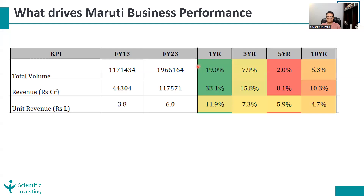I have taken FY13 and FY23 numbers here. Let us look at the five and ten year numbers rather than one and three year, because the auto sector is doing well and those numbers will look very good. The volume growth rate for Maruti averages around 3.5 percent, versus the unit revenue growth rate of around 5.5 percent. In 2013, the average selling price of one Maruti car was 3.8 lakh rupees, and in 2023 it was 6 lakh rupees. This is where we are getting the lift, and despite 3.5 percent average volume growth, the net revenue growth is 9 percent — because unit value growth is almost 2x the volume growth.